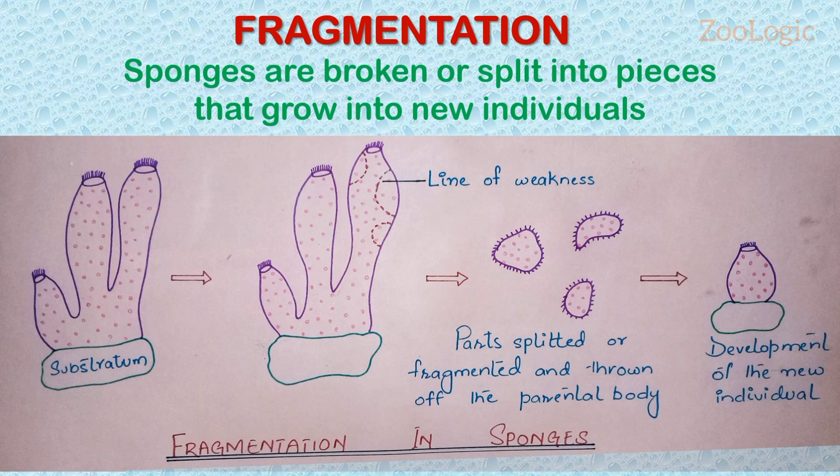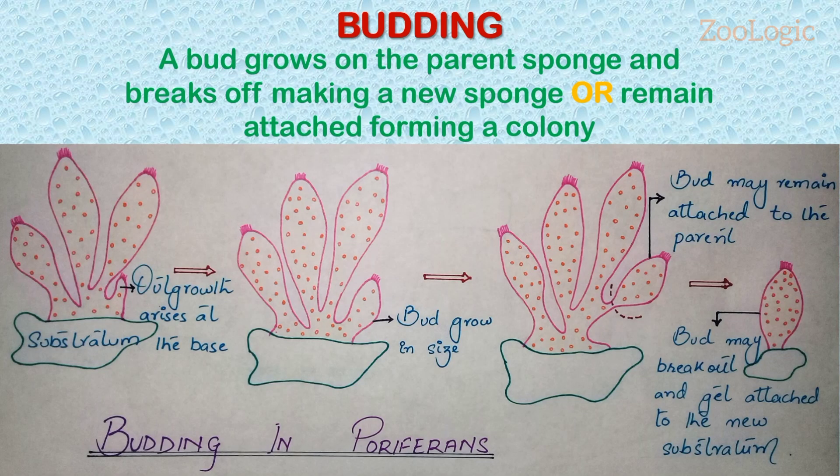This process of asexual reproduction is termed as fragmentation. Some sponges reproduce asexually by budding. As shown in the diagram, a small part of the parent body grows as a bud and becomes differentiated into a new individual. This individual may take up independent existence, or the buds from a single parent may remain attached, forming a colony composed of many individuals.